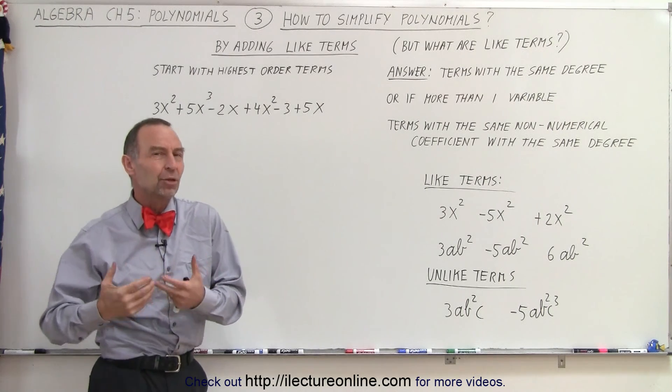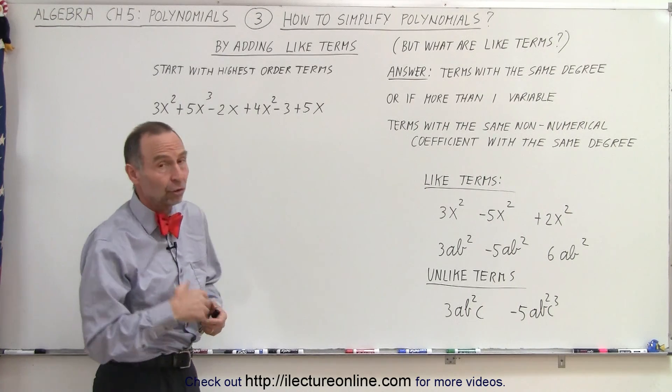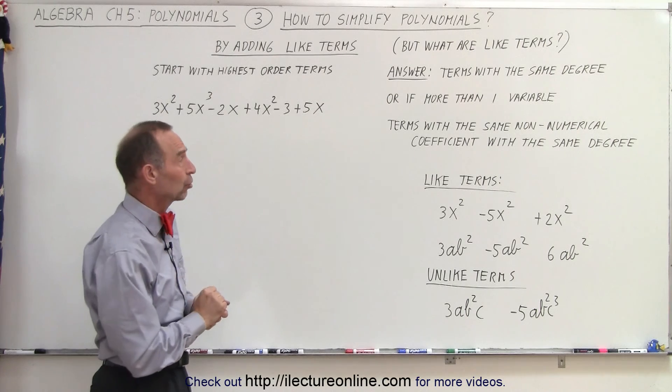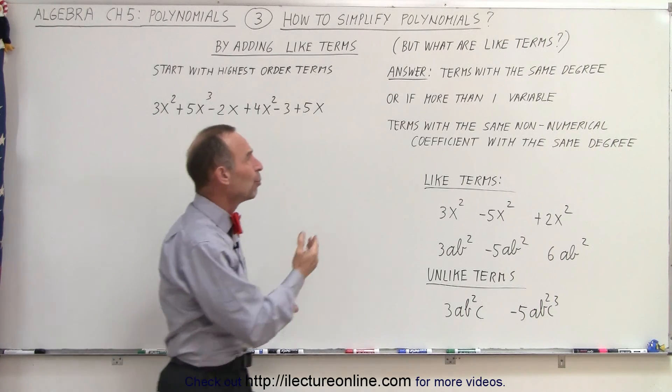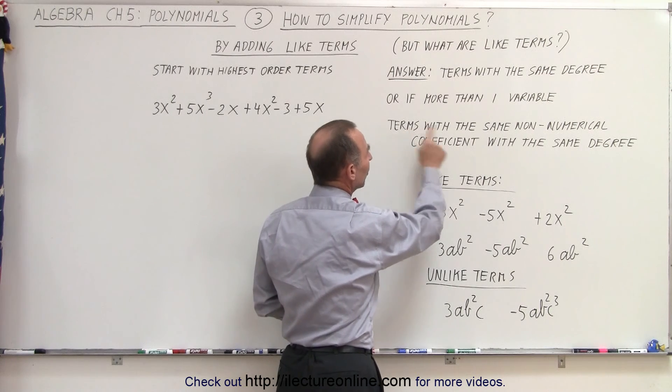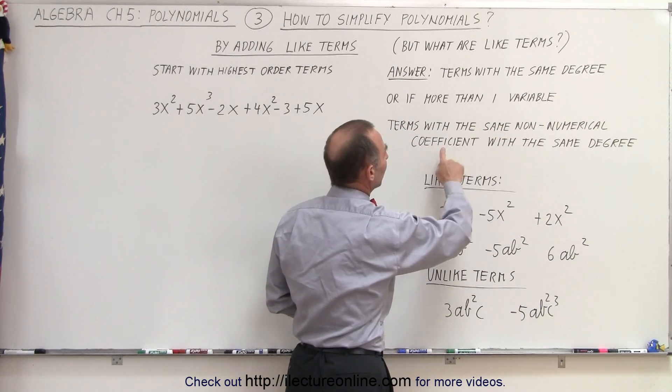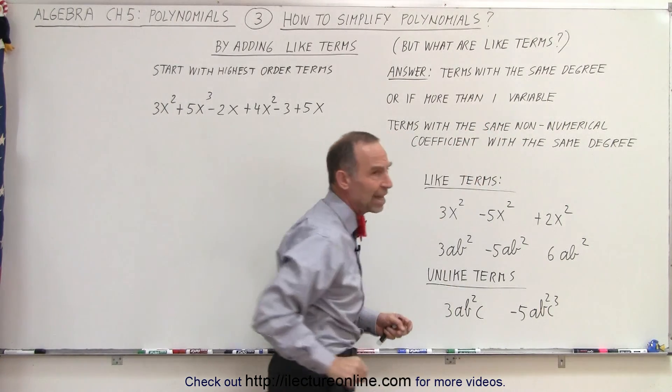Well, terms with the same degree are like terms, assuming there's only one variable in each term. But what if we have more than one variable? Then the terms must have the same non-numerical coefficients with the same degree.